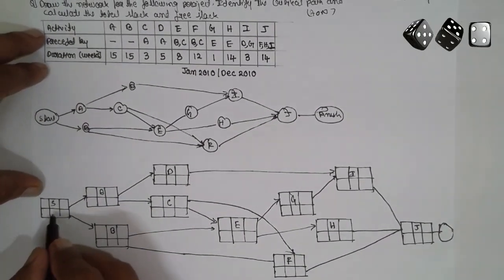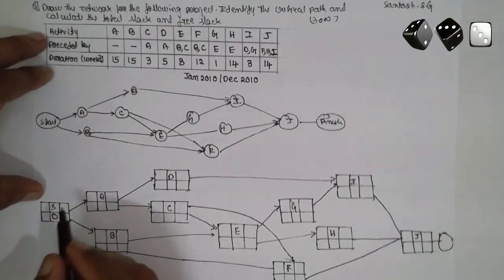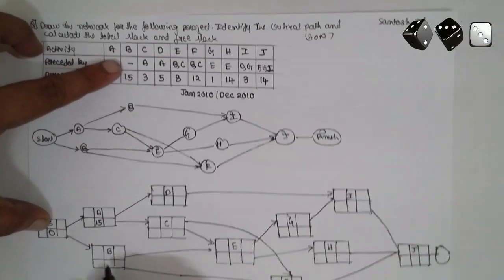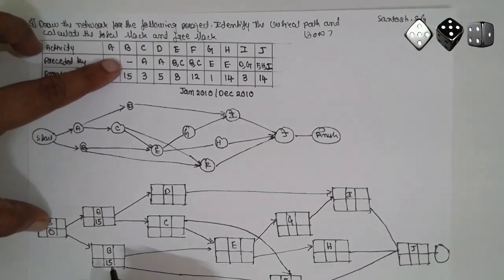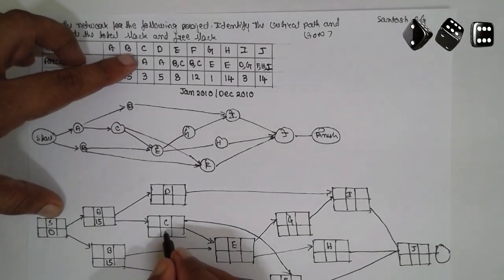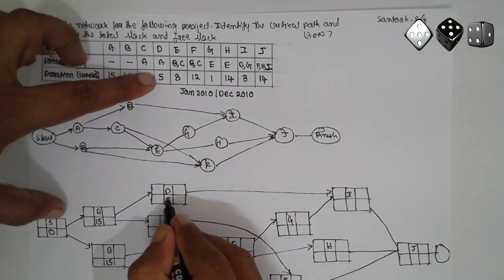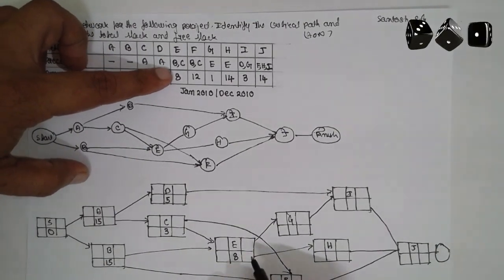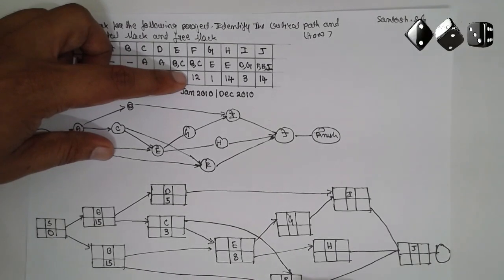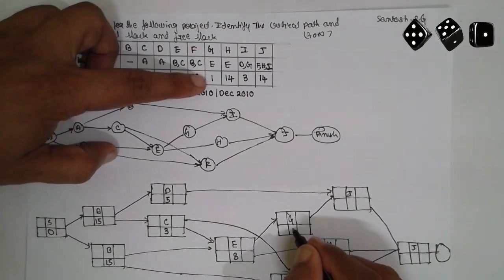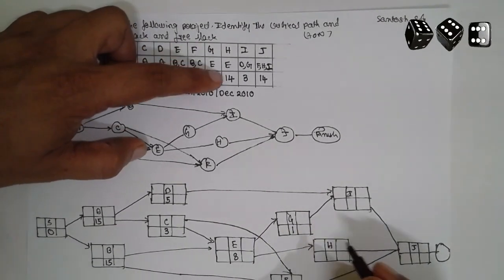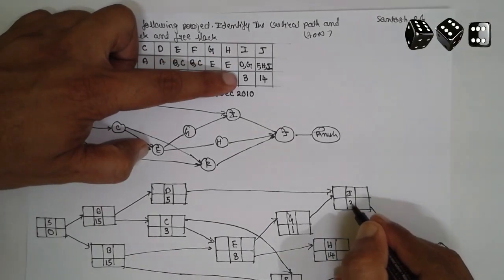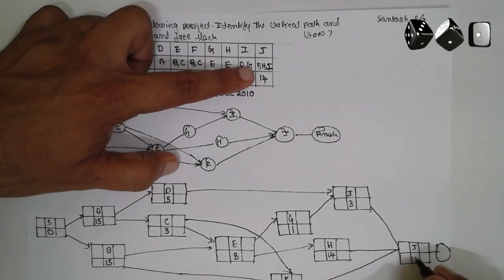Now starting here, I will consider 0 for start. At A it is 15, write 15. At B it is 15, write 15. C it is 3, write 3. D it is 5, write 5. E it is 8, write 8. F it is 12, write 12. G it is 1, write 1. H it is 14, write 14. I it is 3, write 3. J it is 14, write 14.